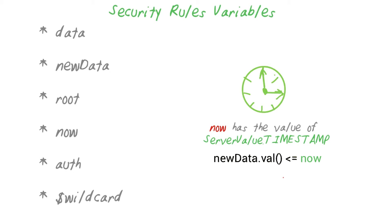For example, the following rule could be used to check that somebody isn't trying to write a timestamp that is in the future.